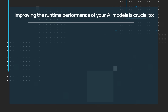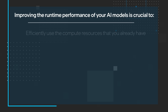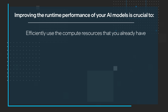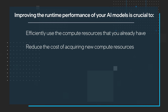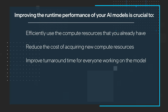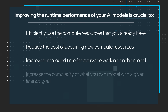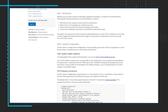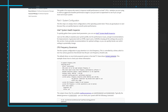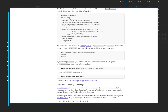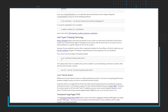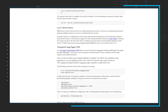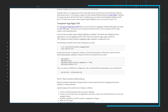improving the runtime performance of your AI models is crucial to efficiently use the compute resources that you already have, reduce the cost of acquiring new compute resources, improve turnaround time for everyone working on the model, and increase the complexity of what you can model with a given latency goal. This guide is for anyone who wants to improve model performance on Intel CPUs, whether you are trying to meet an aggressive baseline performance target or you just want to experiment to see if you can get more out of your system.